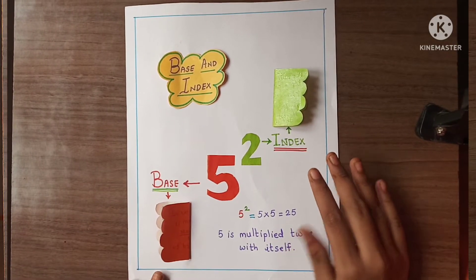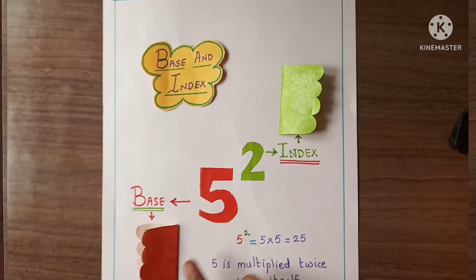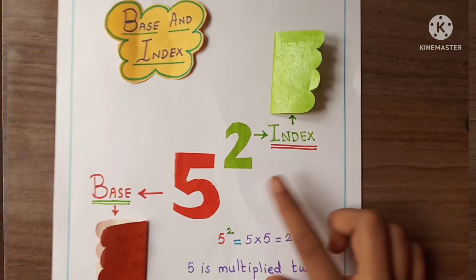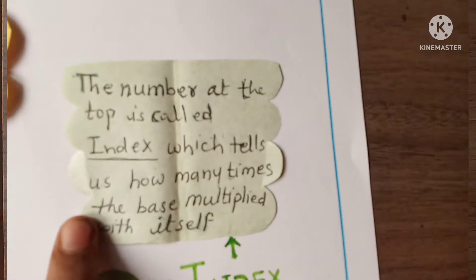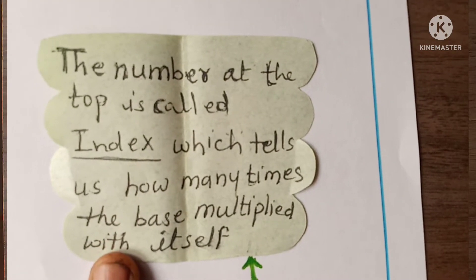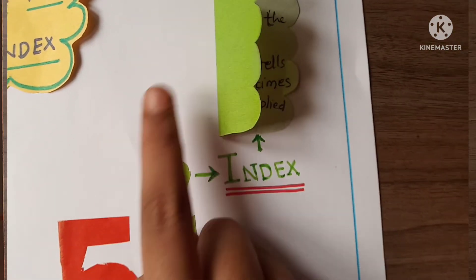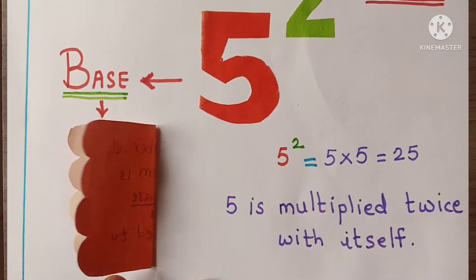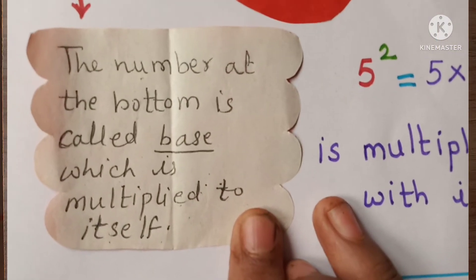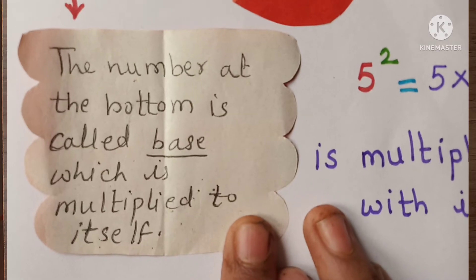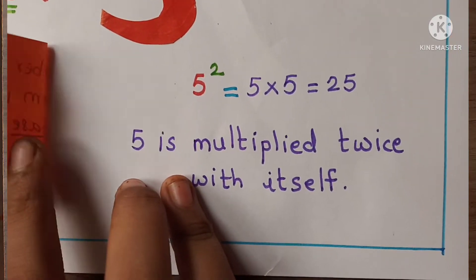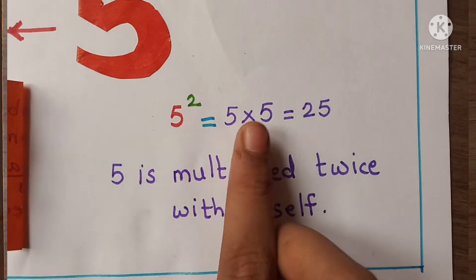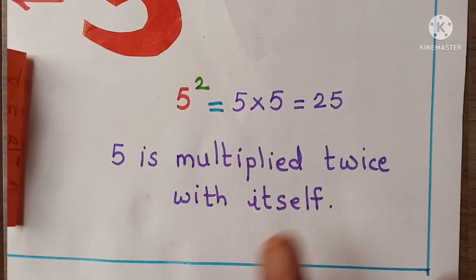Here is the third page which is base and index. Five is the base in 'five raised to two'. Two is the index. Here is the description of index and here is the description of base. It means five is multiplied twice with itself.